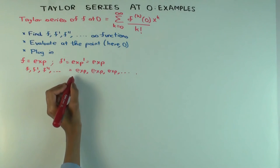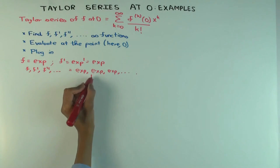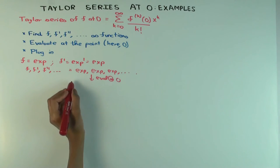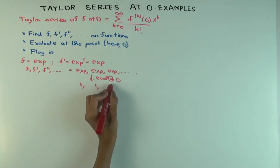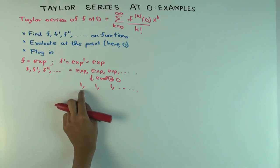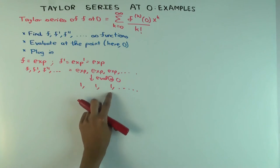Now what do we have to do? Plug in zero. Evaluate at zero. What do we get? Ones, all ones. So f(0) is one, f'(0) is one, f''(0) is one, and so on.